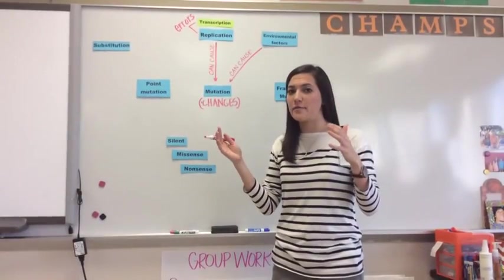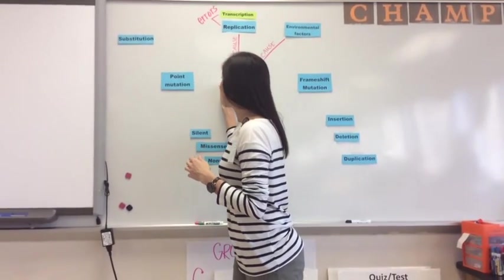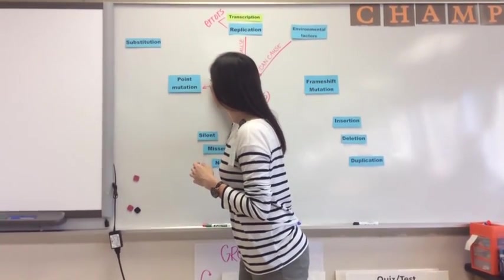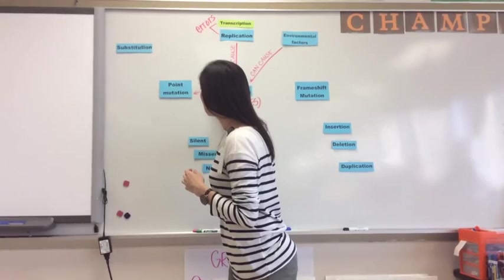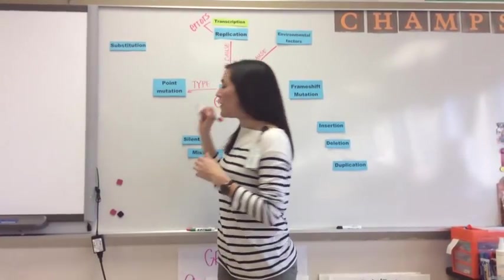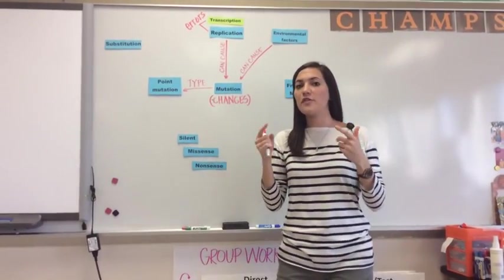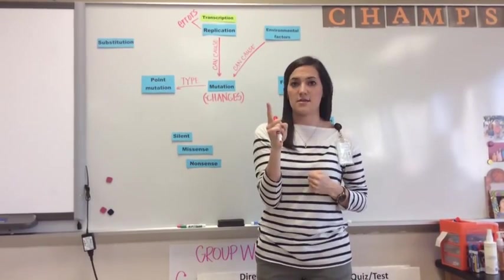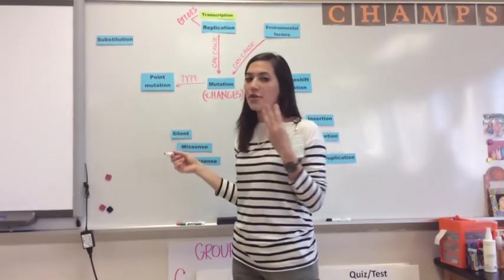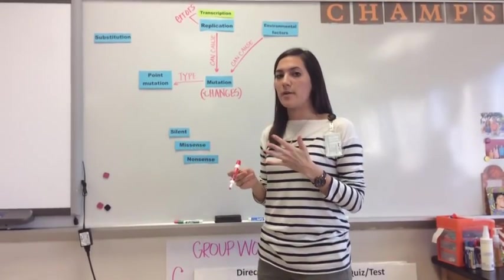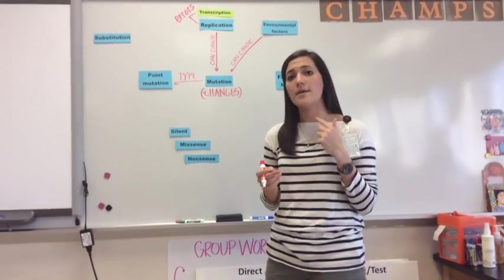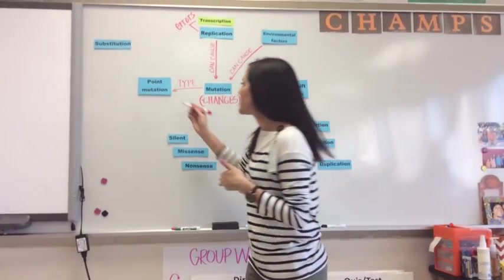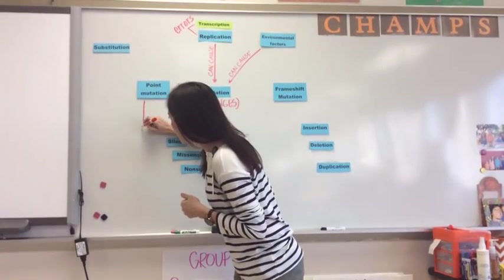So our first category of mutations is called point mutations. So this is the first type of mutations you might see. So when you think of point, think of pointing at something. When you point, you point at one thing. So point mutations, there are three types. And what we're going to notice about point mutations is that it affects one base in our DNA.